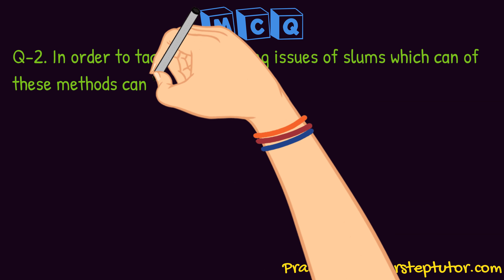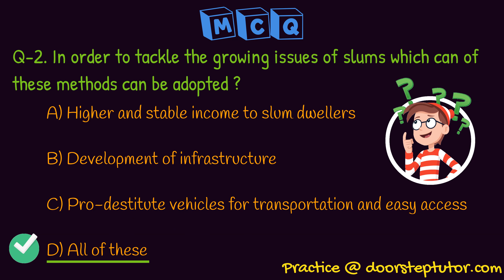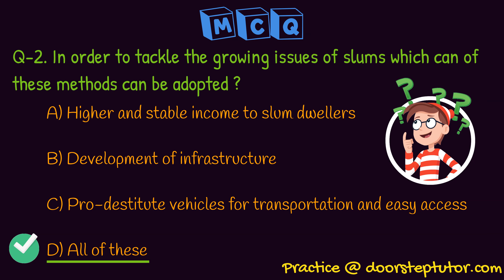Question number two: In order to tackle the growing issues of slums, which methods can be adopted? If we give slum dwellers a higher and stable income, they will be able to have a good life and better living standard. Second, development of infrastructure — if slums are given basic amenities, hygiene, sewage, and sanitation, residents can have a better life. Pro-poor vehicles for transportation and easy access should also be made available so they can travel to find work. The answer is option number four: all of these are correct.